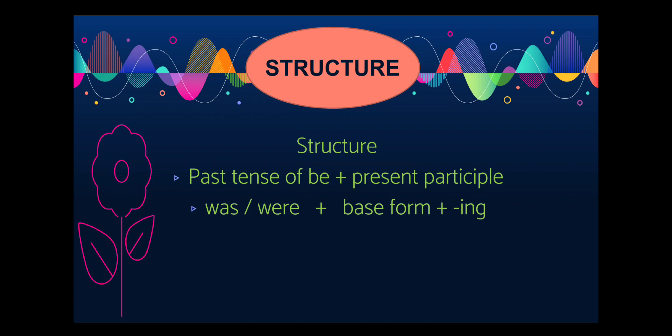The structure of Past Continuous Tense is to use past tense of be with present participle. The past tense of be is was or were depending on the subject. If the subject is singular we will use was and if it is plural we will use were. And the base form of the verb will be used with -ing.